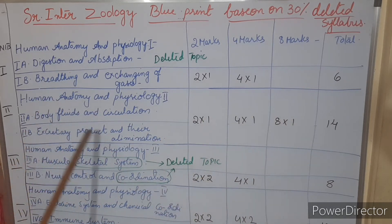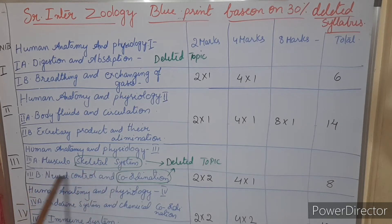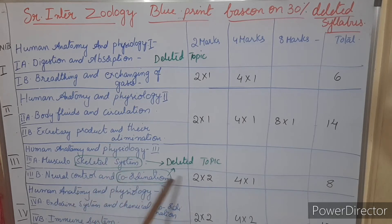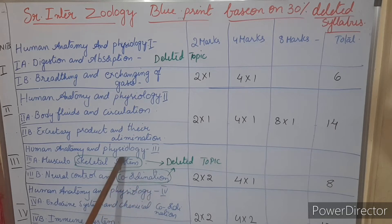Coming to Unit 3, we have 3A — Musculoskeletal System — and 3B — Neural Control and Coordination. Both have partial deletions: in the Musculoskeletal System, the Skeletal System is a deleted topic, and in Neural Control and Coordination, the Coordination part is deleted. So Skeletal System and Coordination are both deleted.